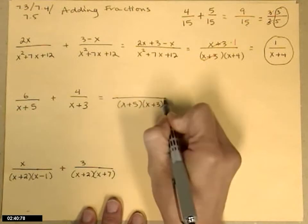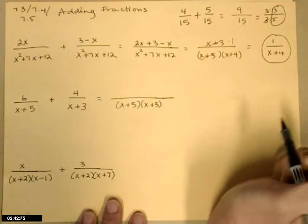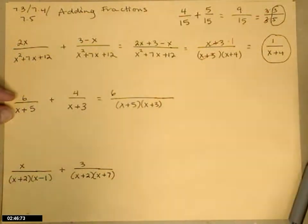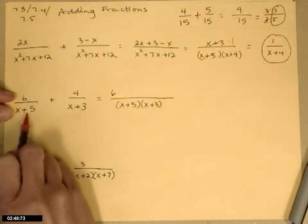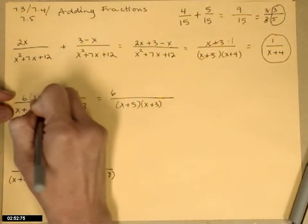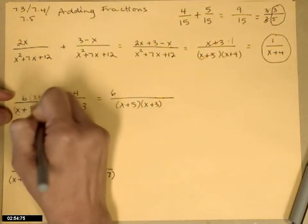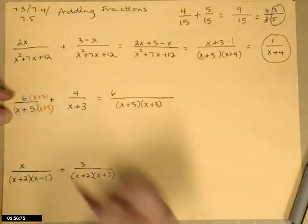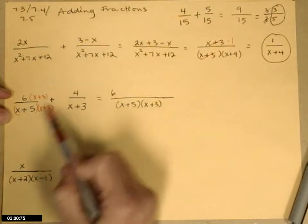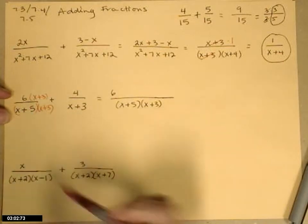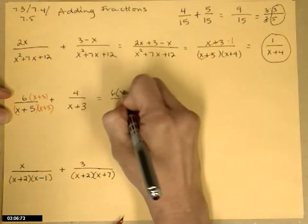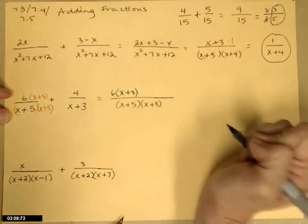The numerators, I write mine a little bit differently than the authors of our textbook do. The 6 over x plus 5, in order to make this fraction have that common denominator, I would have to multiply the top and the bottom by the factor that it's missing. It was missing the x plus 3. So now it has the same denominator. So what I'm going to write over here is 6 times x plus 3.